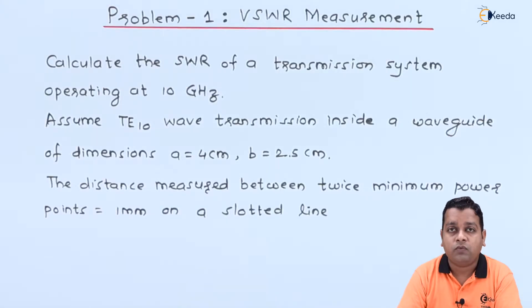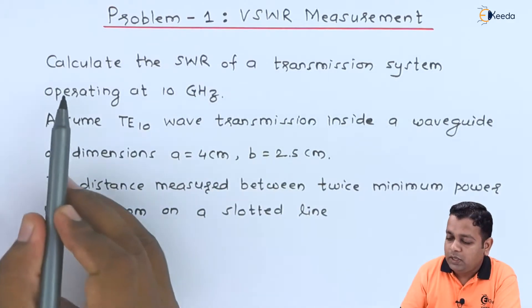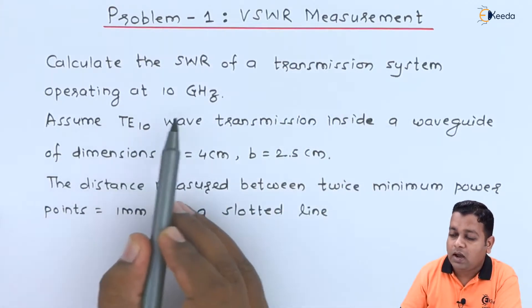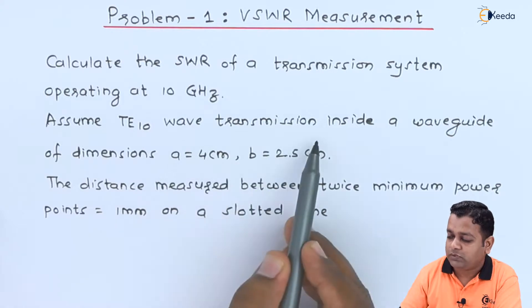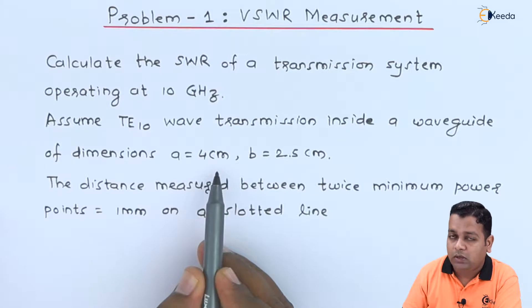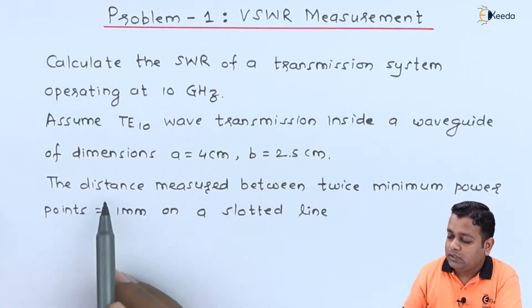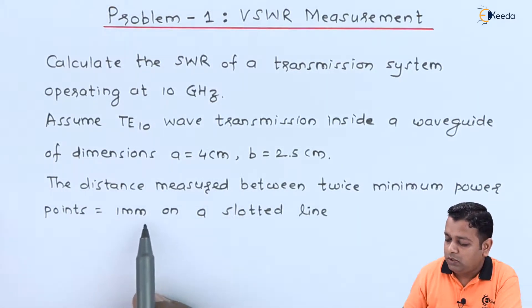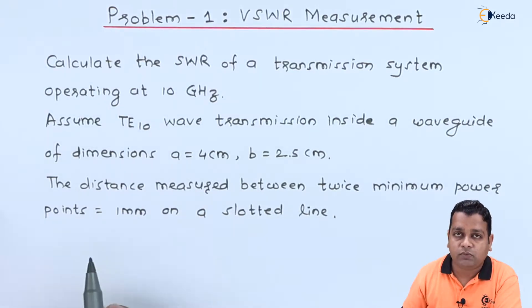Here we are provided with the problem statement for VSWR measurement. It begins: calculate the SWR of a transmission system operating at 10 GHz. Assume TE10 wave transmission inside a waveguide of dimensions a = 4 cm, b = 2.5 cm. The distance measured between twice minimum power points is equal to 1 mm on a slotted line. This completes the problem statement.